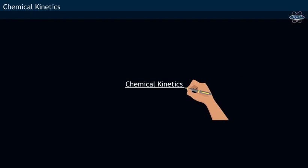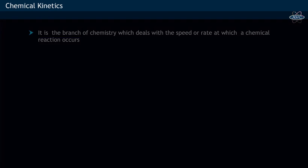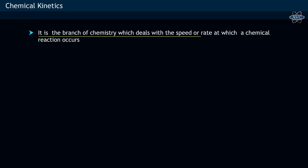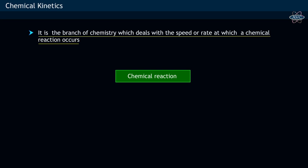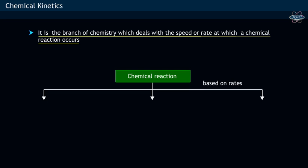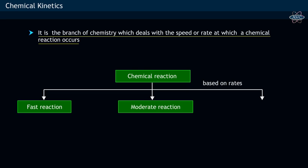Chemical Kinetics is a branch of chemistry which deals with the speed or rate at which chemical reactions occur. Chemical reactions, based on their rates, are classified as fast reactions, moderate reactions, and slow reactions.